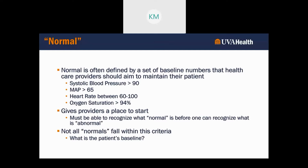Some examples: keep systolic blood pressure greater than 90, keep MAP greater than 50, a normal heart rate is between 60 to 100, and a normal O2 saturation is greater than 94%. However, this is a really nice place to start — I have an idea of where I'm going, what things should be, and perhaps what things shouldn't be.